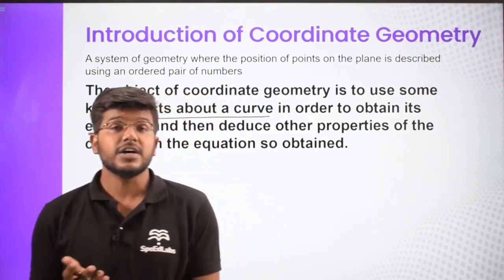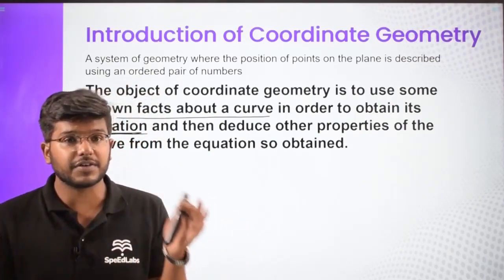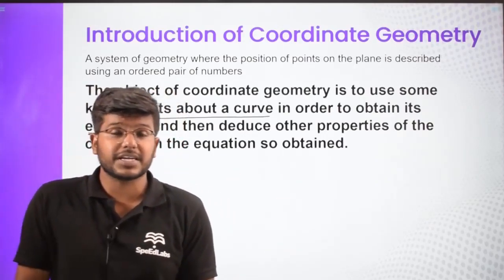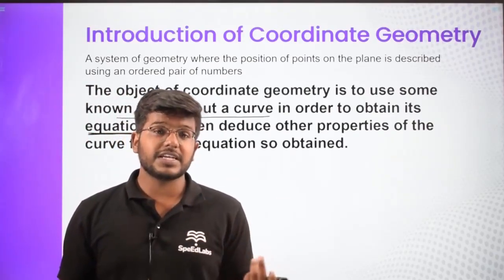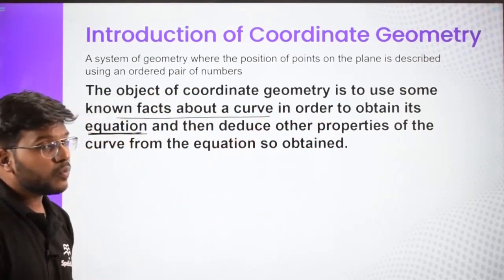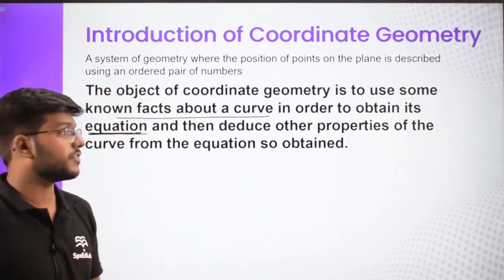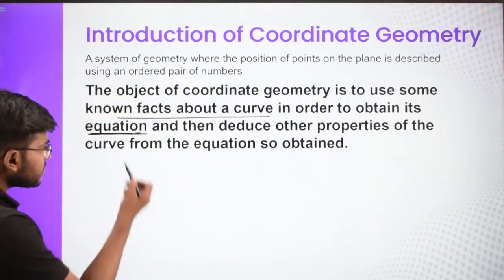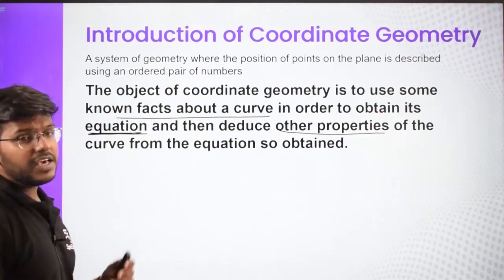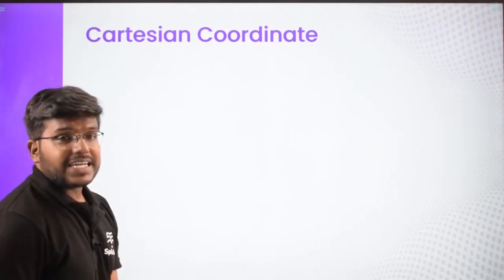In coordinate geometry we talk about equations. Previously you studied the geometrical nature of different curves — how to find their area, perimeter, and circumference. Here we are going to discuss how we obtain equations of these different curves, and using those equations how we can deduce other properties of the curves as well.